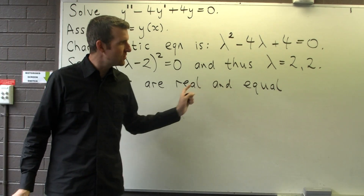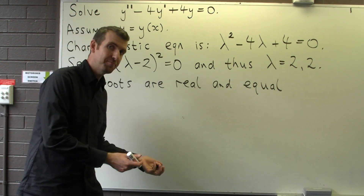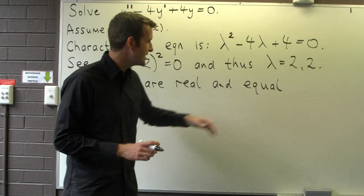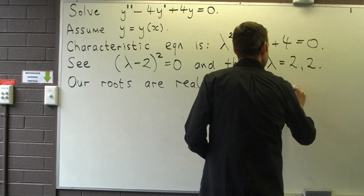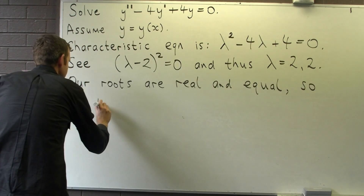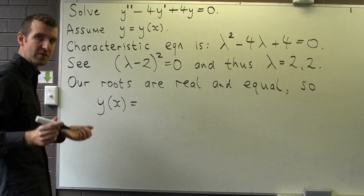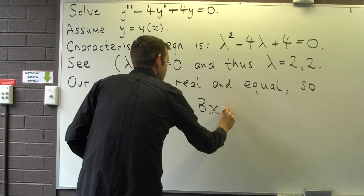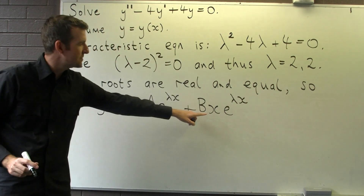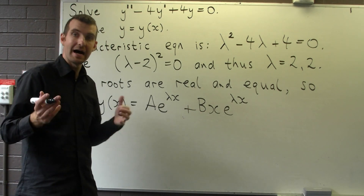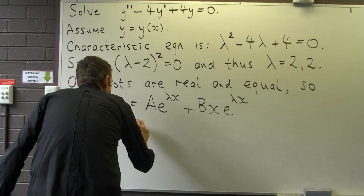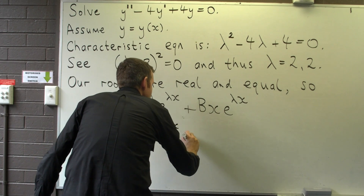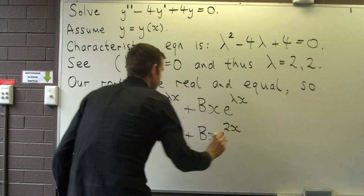We analyse our roots because depending on whether they're real and equal, real and unequal, or complex, the final form of the solution will take on various forms. When we have real and equal roots, our solution is of the following form. Our solution involves exponential functions — notice here I'm multiplying by x in one term but not the other. The big A and the big B are just arbitrary constants. So our solution will be of this form.